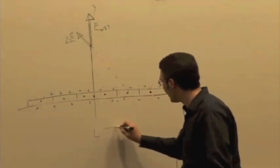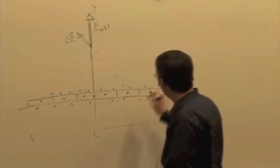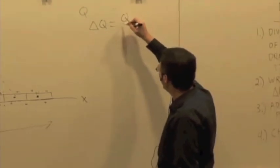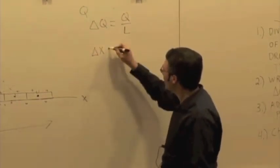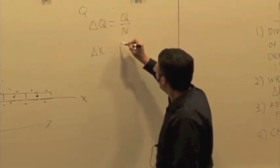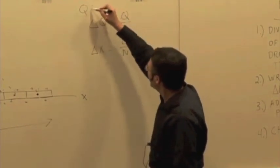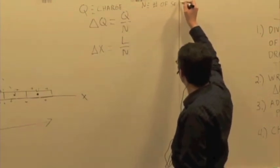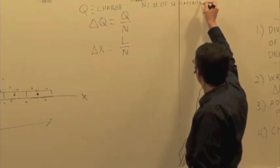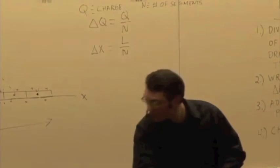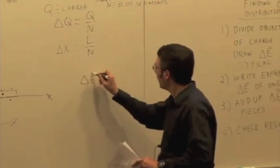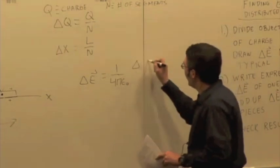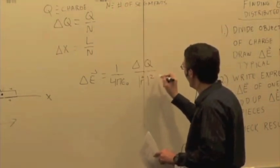So here are some symbols. The total length is L. The total charge is Q. Delta Q is going to be Q divided by N, and delta X is going to be L divided by N. Q is the charge, N is the total number of segments. So we can write an expression: delta E is equal to one over four pi epsilon zero, times delta Q over R squared, times R-hat.